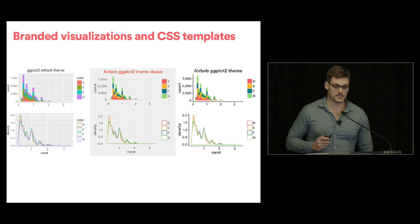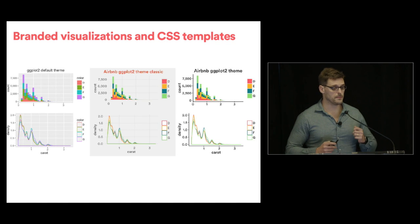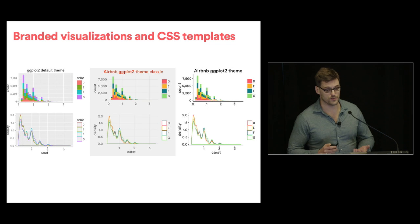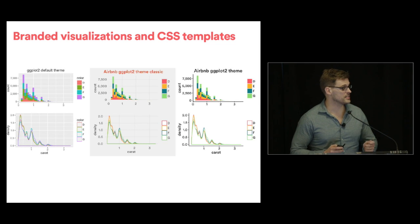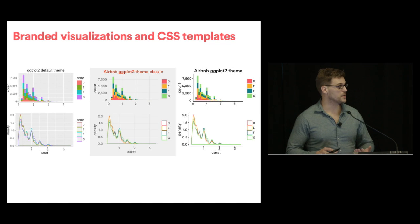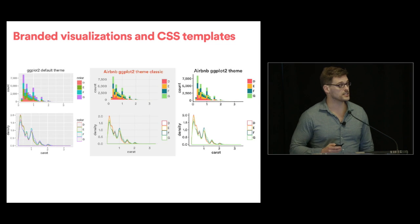The second component is branded visualizations and CSS templates. We have CSS templates for Shiny and a bunch of interactive and static visualizations. This is just an example of ggplot — it might seem simple, but it really adds consistency to the data science brand at Airbnb. Whenever there is a report, there is a consistent feel and look, and it can be included directly in our presentations, matching our themes.